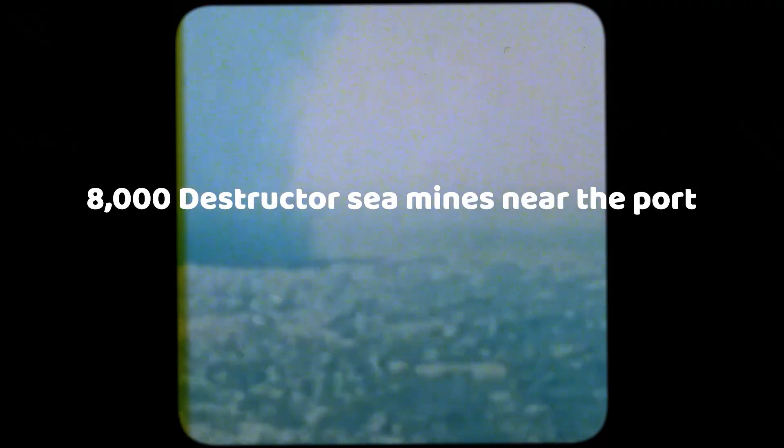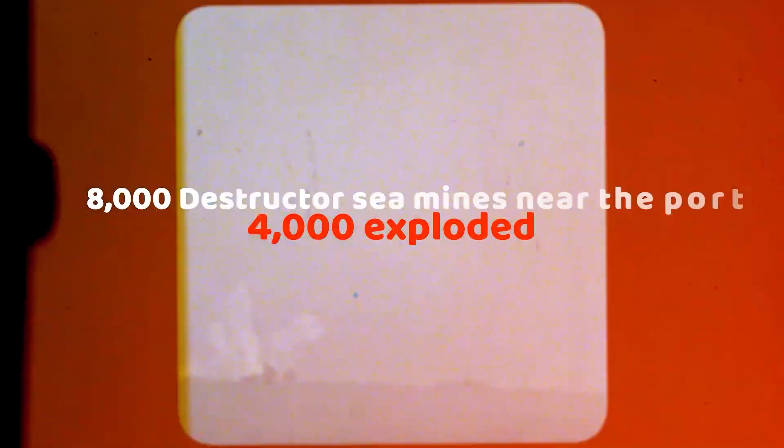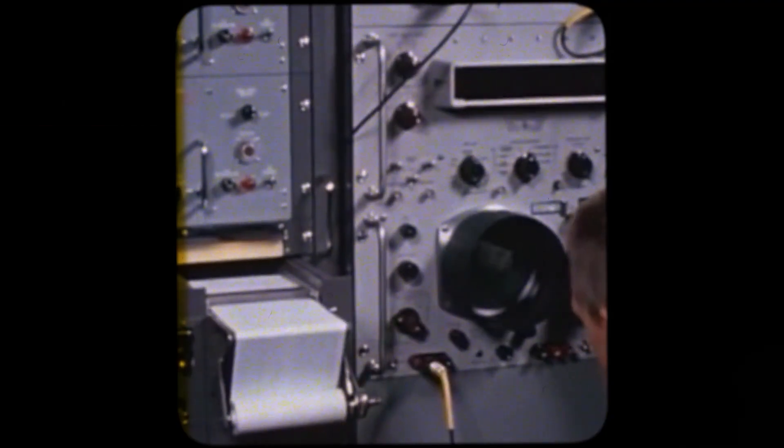On August 4, 1972, an extremely strong solar flare occurred, hitting the Earth during the Vietnam War. In North Vietnam near the port of Haiphong, out of approximately 8,000 destructor sea mines near the port, 4,000 exploded in little more than a few weeks due to the geomagnetic storm, according to the U.S. Navy.